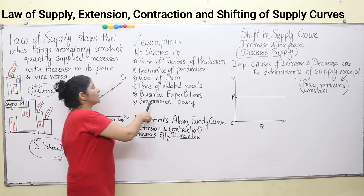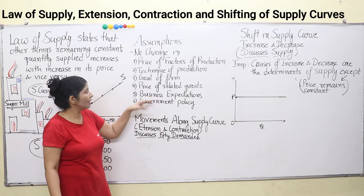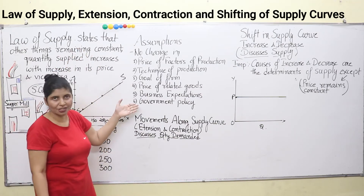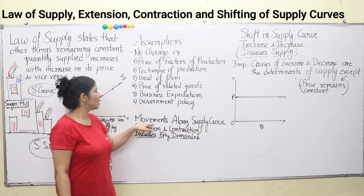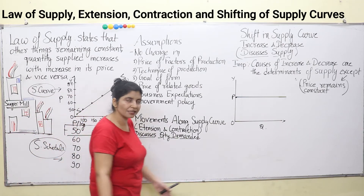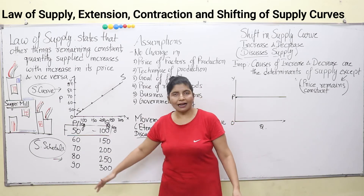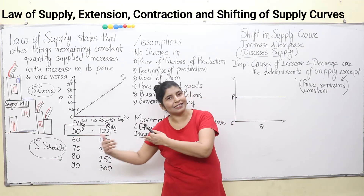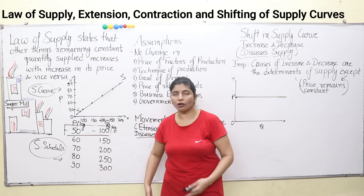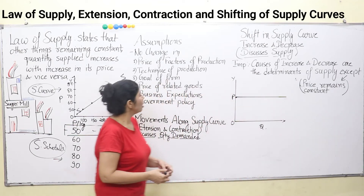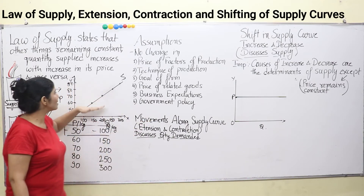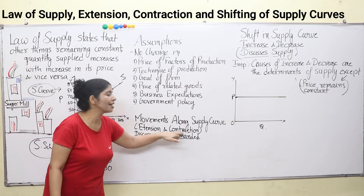In any case, if any of these conditions change, then the law of supply will not operate. So these are the assumptions or conditions or constraints of this law. Then, movements along the supply curve. When we say 'along,' that means side by side — you are moving side by side along the curve. This movement is your extension and contraction of supply.